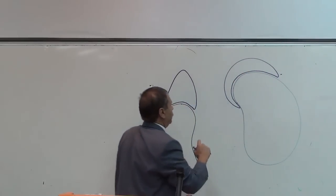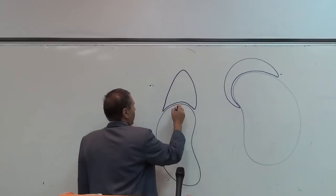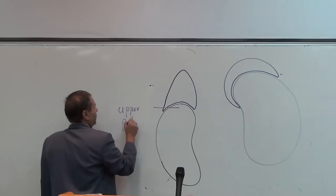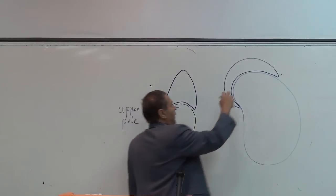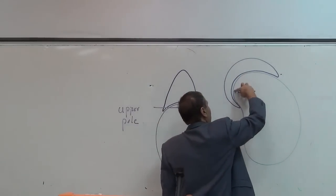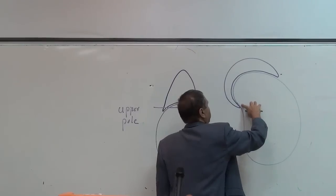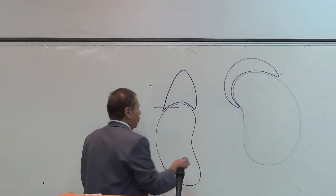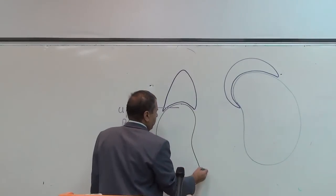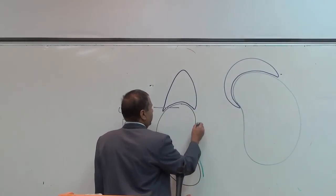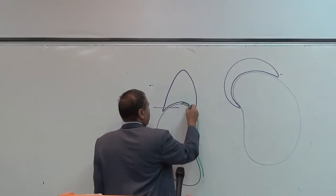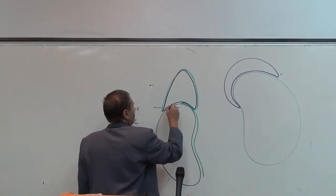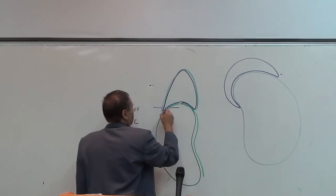The right suprarenal gland lies at the upper pole of the kidney, while the left suprarenal gland lies at the upper pole and also the medial border of the left kidney. Both glands are enclosed in the renal fascia, but in a special compartment away from the kidney.